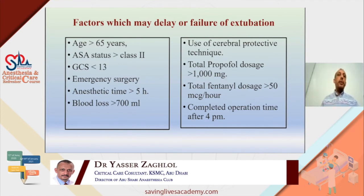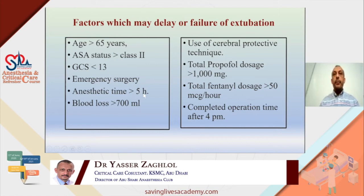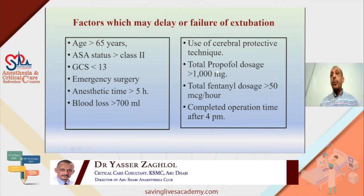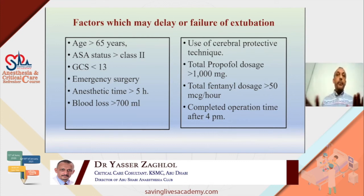Some patients may have delayed extubation depending on patient, surgery, or anesthesia factors. Factors suggesting delayed extubation include: preoperative GCS less than 13, emergency surgery, procedure lasting more than 5 hours, blood loss more than 700 mL. If the patient was on cerebral protective techniques using high-dose thiopental over 1,000 mg, or if fentanyl infusion exceeded 50 mcg/hour and surgery completed after 4 p.m., consider delayed extubation or postoperative ventilation.